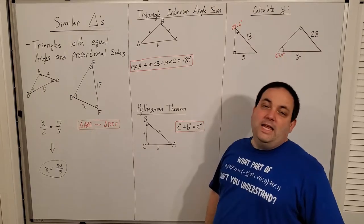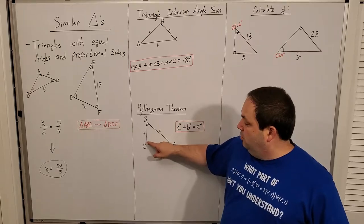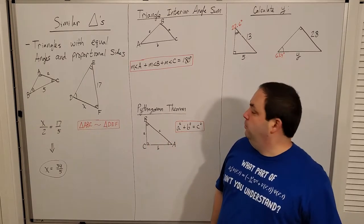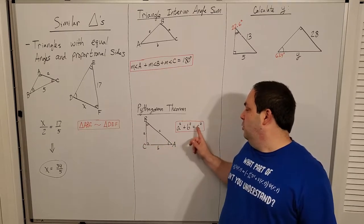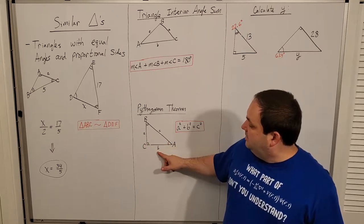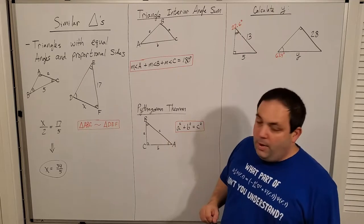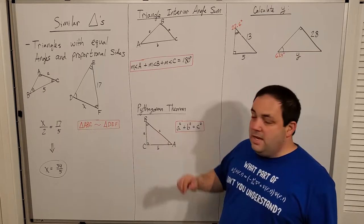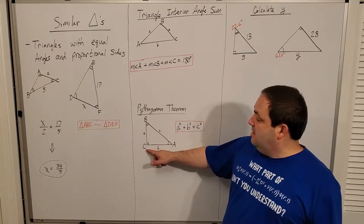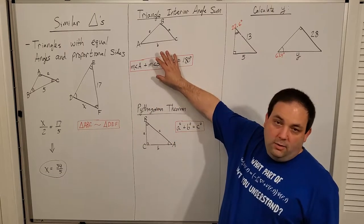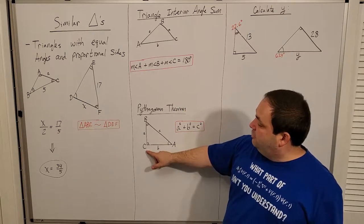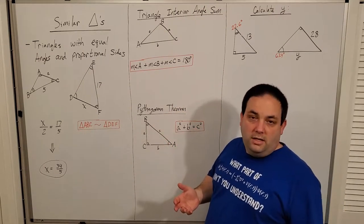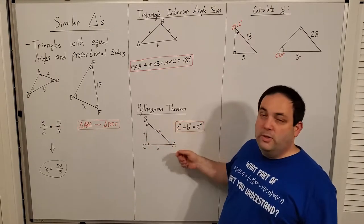For all our triangles in planar trig, the three angle measures have to add up to 180 degrees. And then the Pythagorean theorem: for any right triangle — it has to be a right triangle, indicated by the little corner angle — the sum of the squares of the legs equals the square of the hypotenuse. A and B are legs, C is the hypotenuse. Also note that in a right triangle, A and B must be complementary angles, because C is already a 90-degree angle, and the three must add up to 180.